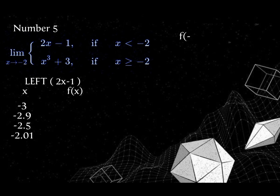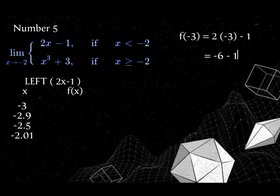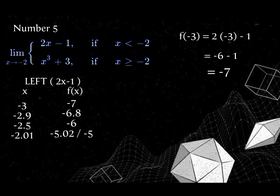Substitute the value of x into 2x minus 1. For example, f of negative 3 equals 2 times negative 3 minus 1, which is negative 6 minus 1, equals negative 7. Doing the same for the others: negative 2.9 gives negative 6.8, negative 2.5 gives negative 6, and negative 2.01 gives negative 5.02, which rounds off to negative 5.